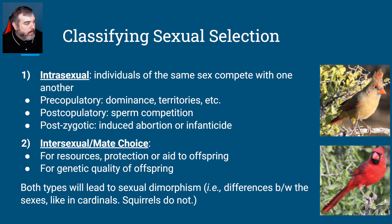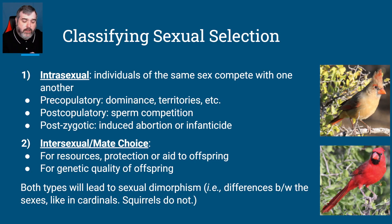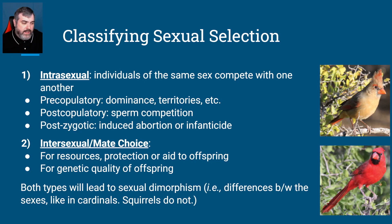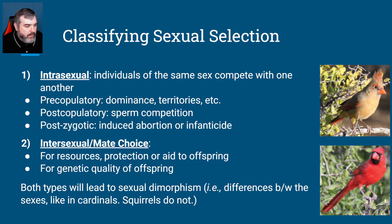Intersexual mate choice is between sexes. Basically, when making choices you're looking for resources, territory, somebody to protect your offspring and protect you, and also a high-quality individual to provide good genes for your offspring. Because there's such a big difference between males and females, this leads to what's called sexual dimorphism.